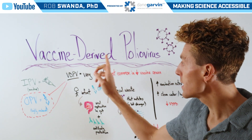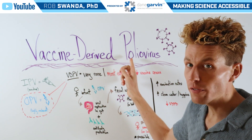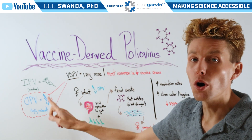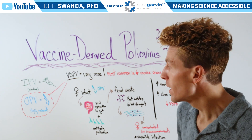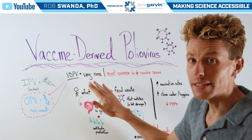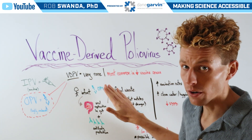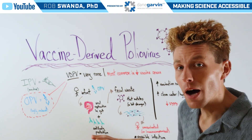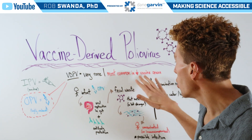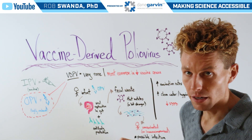For vaccine-derived polio virus, we're only talking about OPV. Now vaccine-derived polio virus is very rare, but it's common in areas where there's low vaccine coverage.